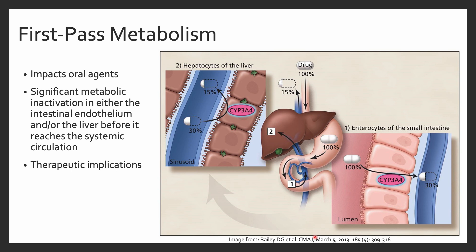First pass metabolism is unique to orally administered products, where the concentration of an oral product is greatly reduced before it ever reaches systemic circulation. The small intestine and the hepatocytes of the liver are the primary sites of inactivation during first pass metabolism. Here we have a tablet administered orally, passing through the GI system into the stomach and reaching the small intestine, where most oral medications are absorbed. In the enterocyte of the small intestine, the drug encounters CYP3A4, or cytochrome P450 3A4, an enzyme involved with drug metabolism.